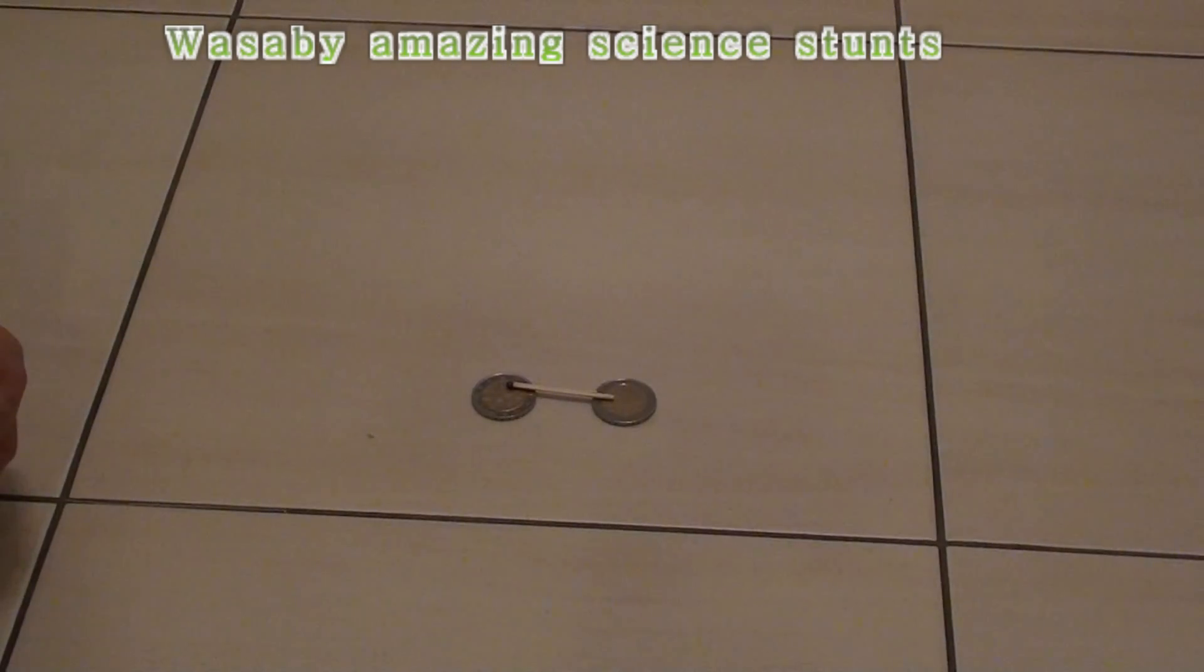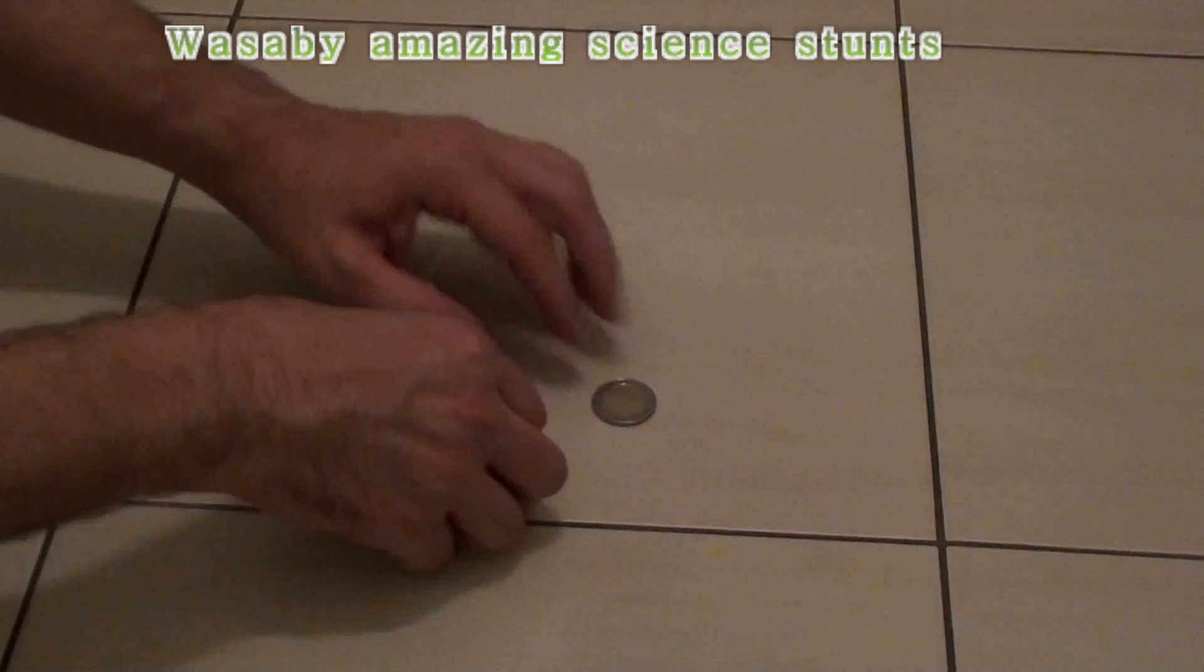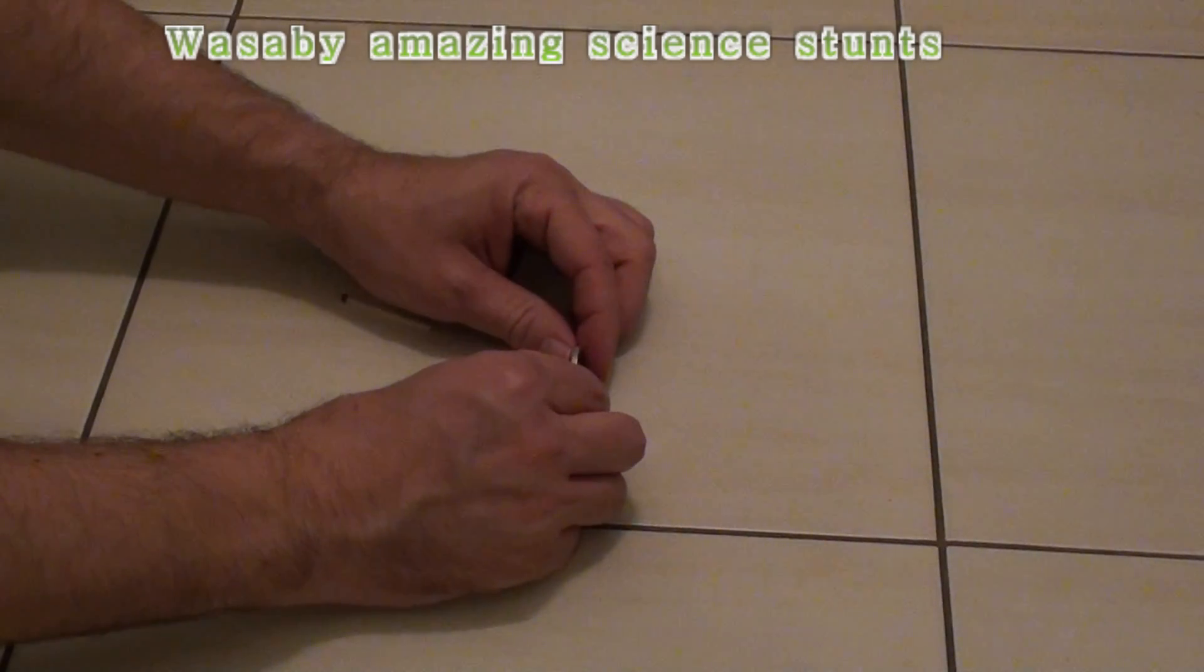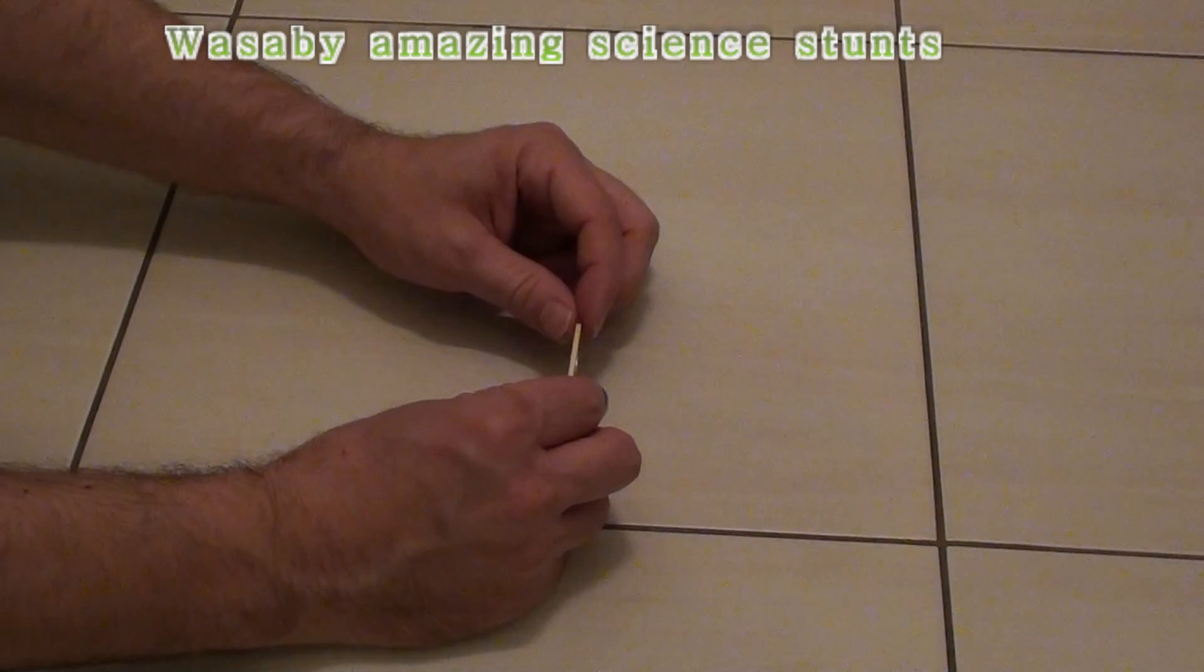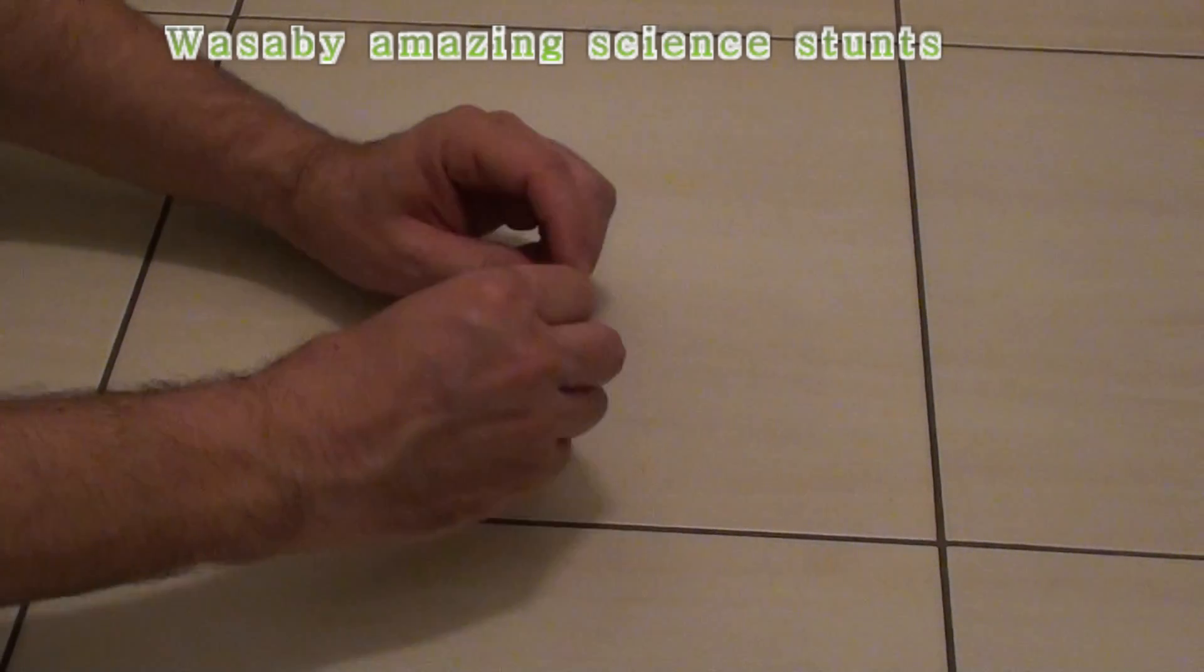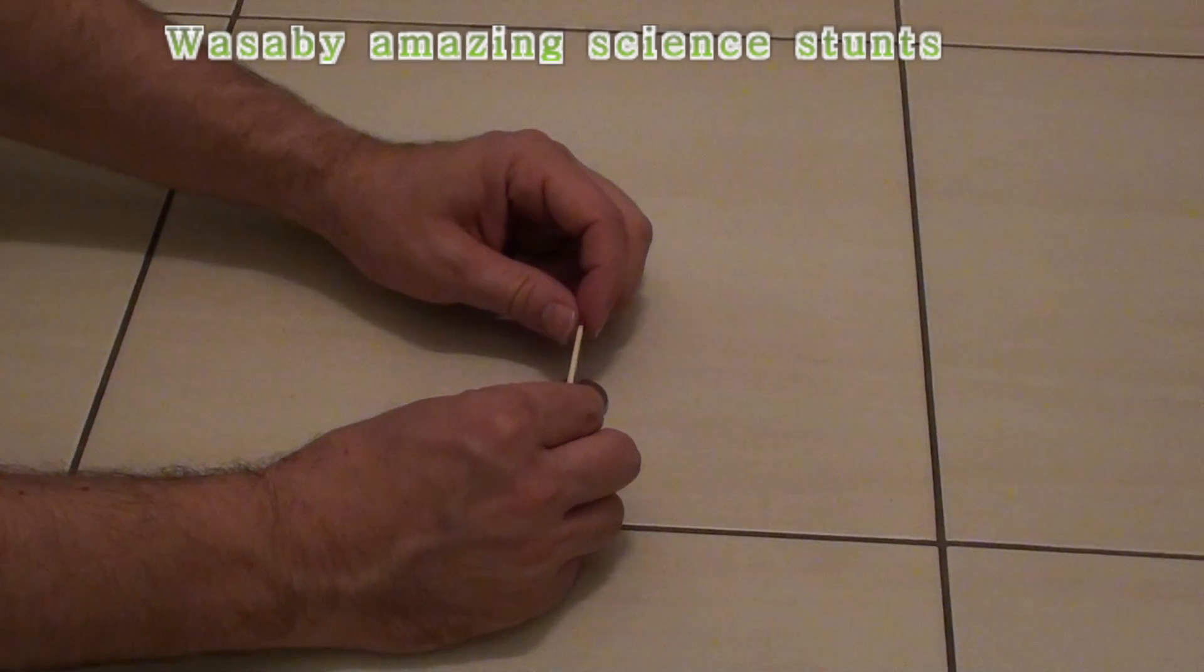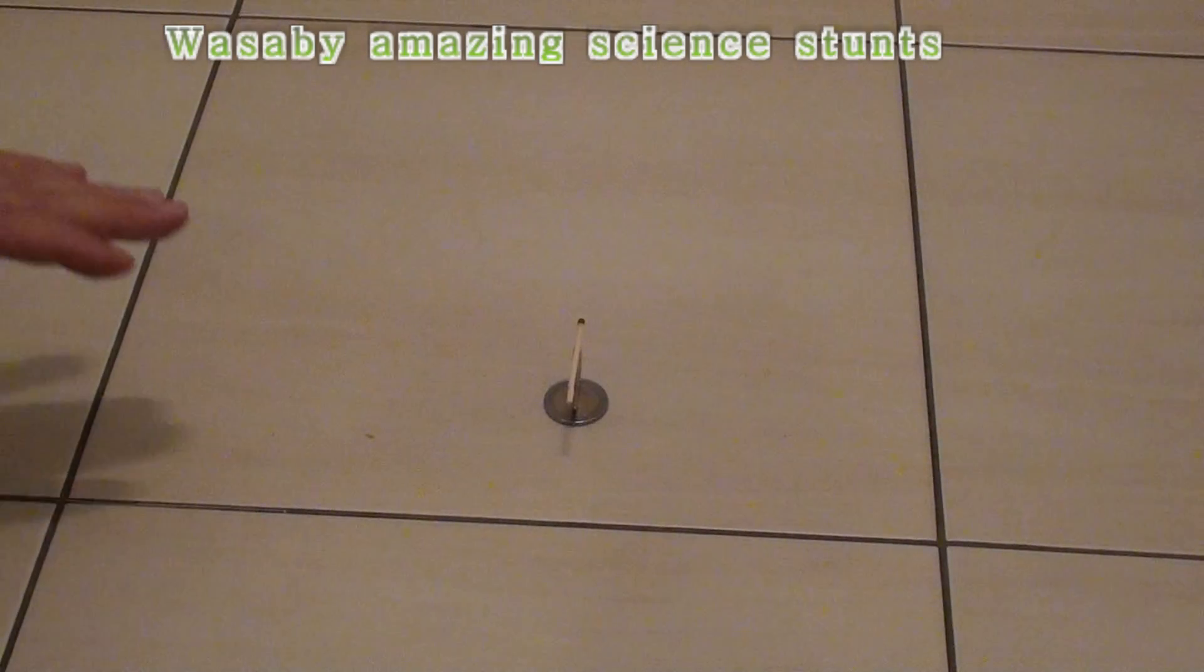That's all. This is to show you very simple trick with coins and match. I will show you how to do it. I will just balance one coin over another. And I will balance match over this coin. That's it.